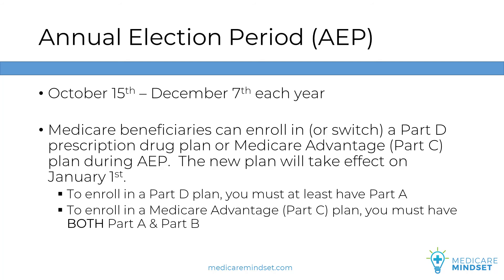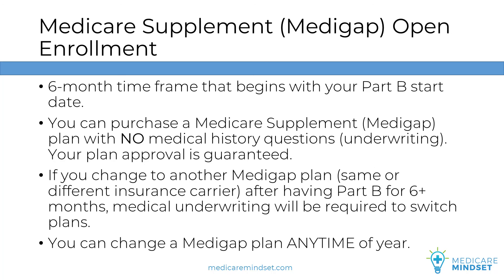Let's finish up with our last enrollment period: the Medicare Supplement Medigap Open Enrollment. When you purchase a Medigap plan, the easiest time to do so is during your Medigap Open Enrollment, because there are no medical history questions during this time. Your plan approval is guaranteed, as long as you do this in the months leading up to your Part B start date or during the first six months of your Part B coverage. However, if you want to change to another Medigap plan with the same or different insurance carrier, medical history questions can be asked and your plan approval is not guaranteed. Contrary to what you may hear, you can actually change your Medigap plan any time of year — the only variable is whether you have to answer medical history questions.